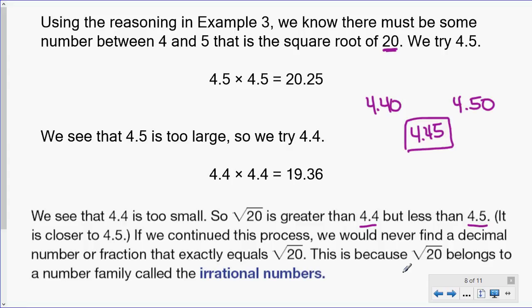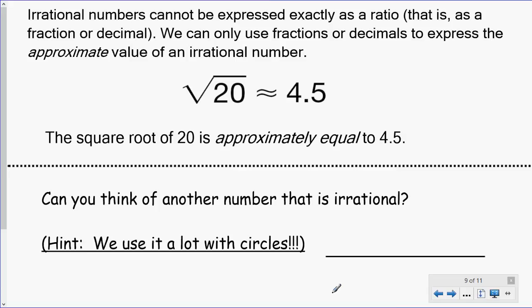That's because the square root of 20 belongs to a number family called irrational numbers. The square root of 20 is an irrational number. Irrational numbers cannot be expressed exactly as a ratio, that is as a fraction or a decimal, because a ratio is really like a division problem and you can get decimals through division. You can only use fractions or decimals to express the approximate value of an irrational number. So the square root of 20 is about equal to 4.5, which means approximately equal when we use that squiggly equal sign. But we'll never get an actual decimal number that truly equals the square root of 20. We can only round it off. Can you think of another number that is irrational? Hint: we use it a lot with circles.